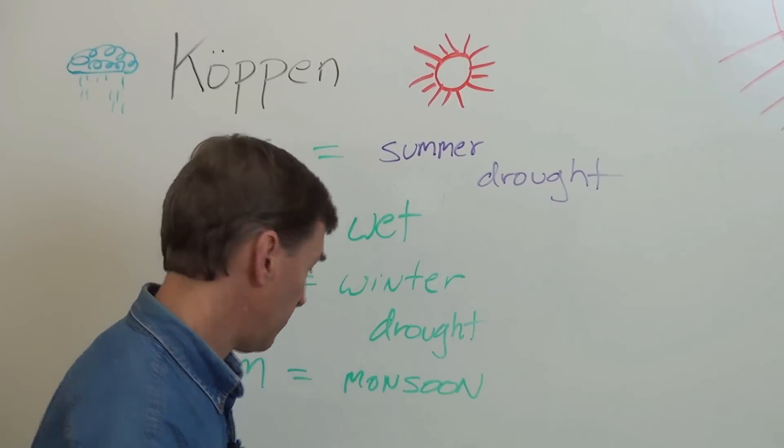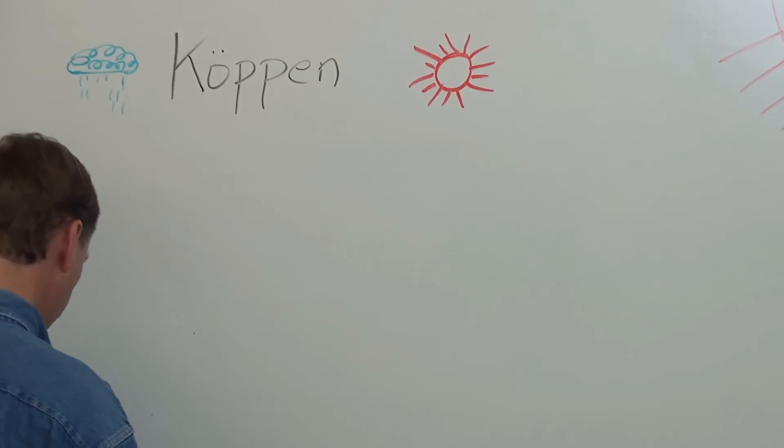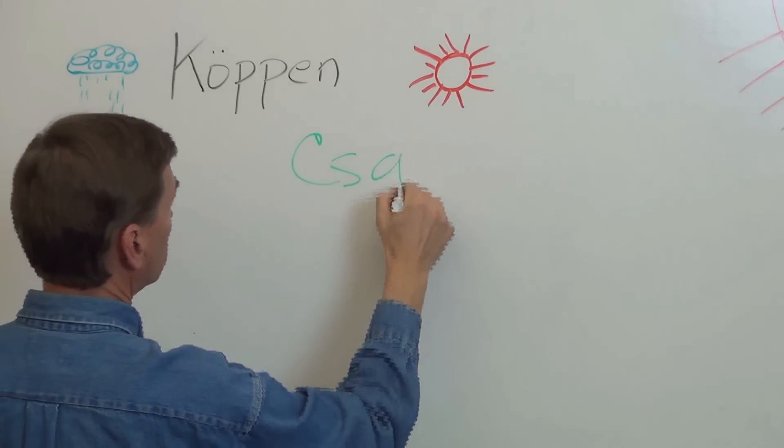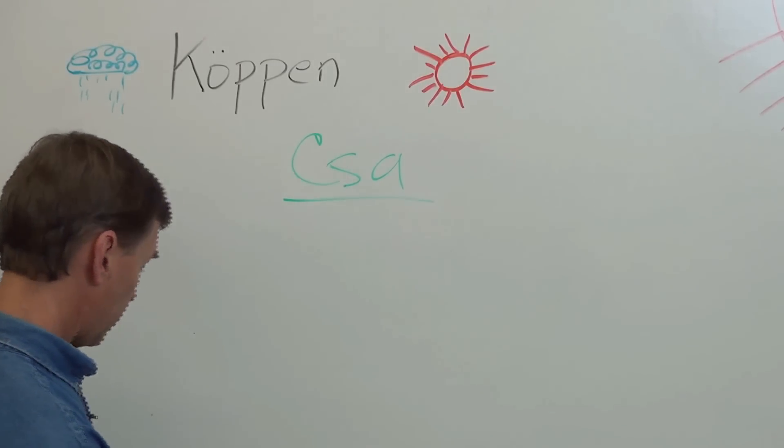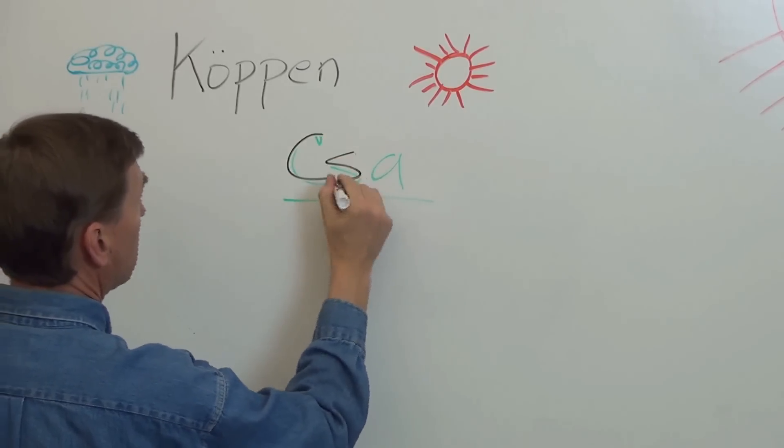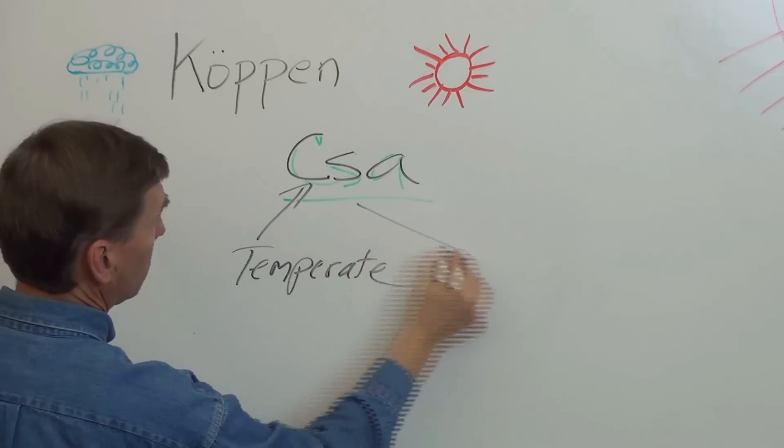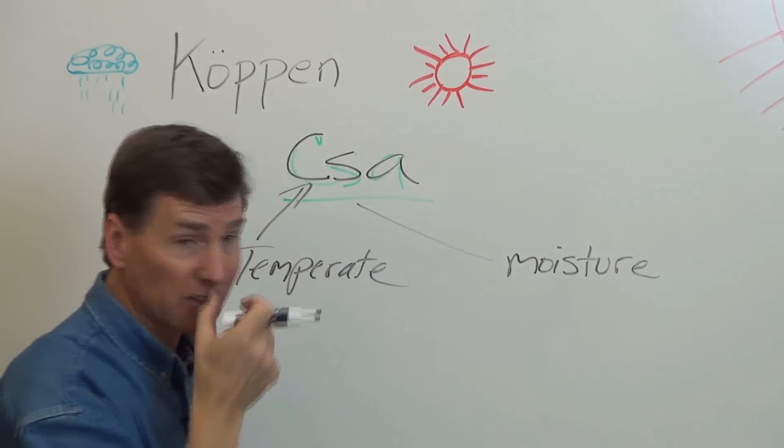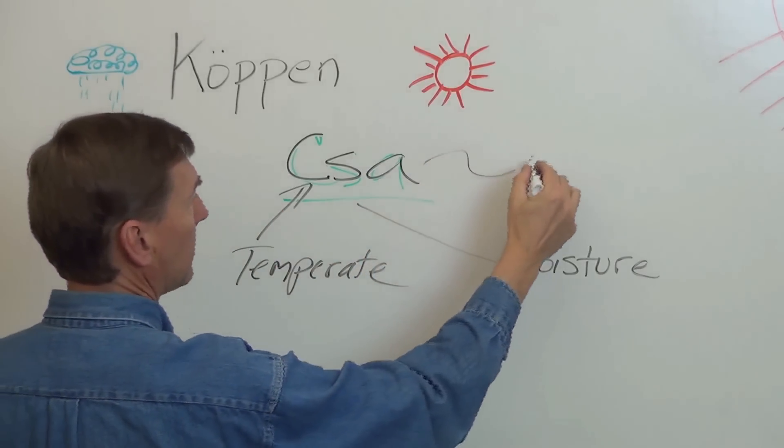And then finally is the third letter. Okay, I almost made a mistake there making that large. So we've got the CSA again. I hope you can see that on the whiteboard here. CSA. Let me make that a little darker actually. C, S, and A. So the first one is temperate. The second one is the moisture, right? Now, let's see if you were paying attention. It wasn't very long ago I just told you this. What does S stand for? Summer drought. Summer drought. And then finally, what the heck is that? That's the temp.